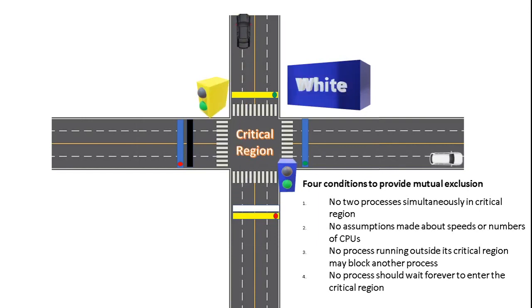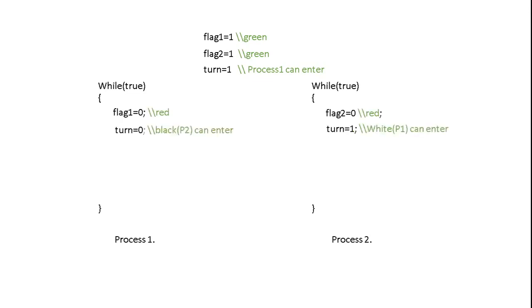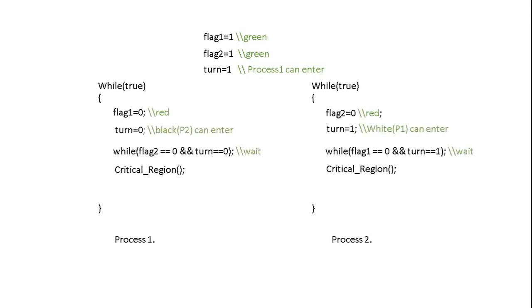Let's see the code for this solution. Instead of traffic lights we use two variables — let's name them flag one and flag two — and instead of the board we use a turn variable. The traffic lights are initially green and turn points to the white car, which is process 1 in this example. Before entering the critical region, each process changes its traffic light to red and updates the turn variable. For process 1, if the traffic light is red and the turn variable is 0, it cannot enter the critical region. When they finish the critical region, they change their traffic light back to green.